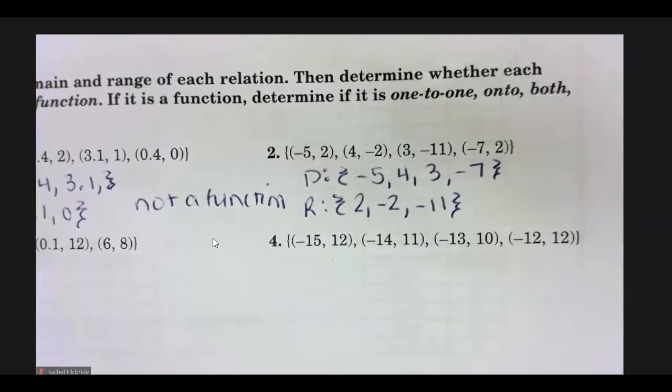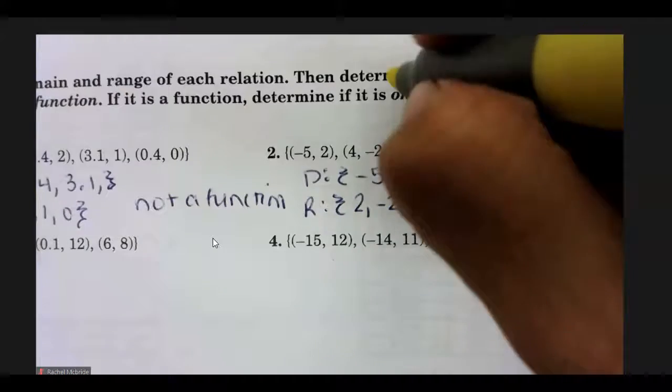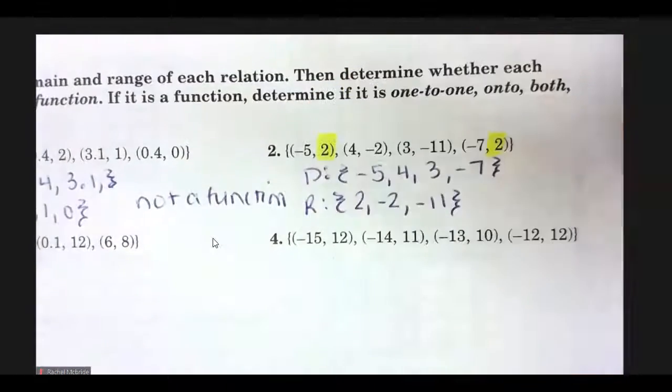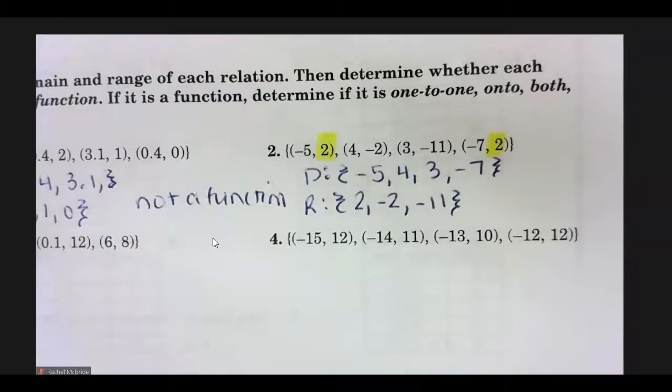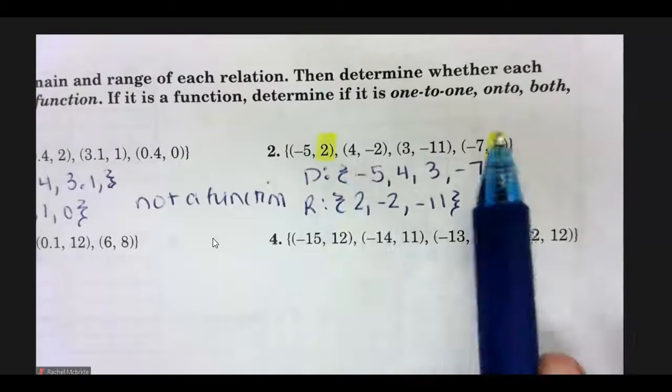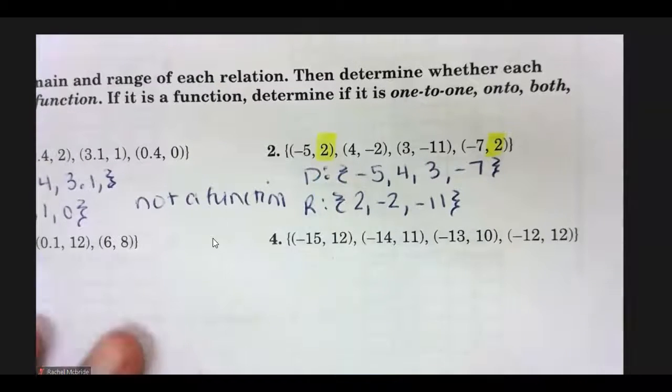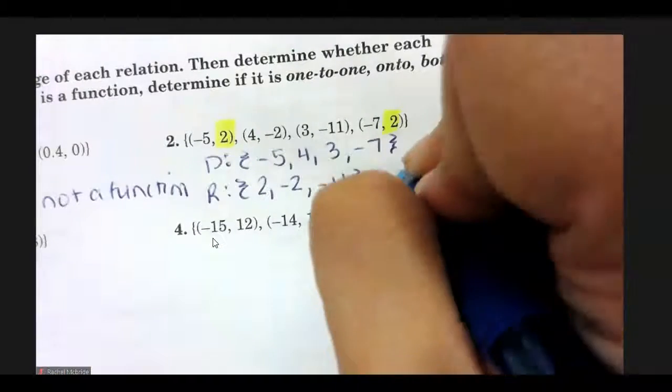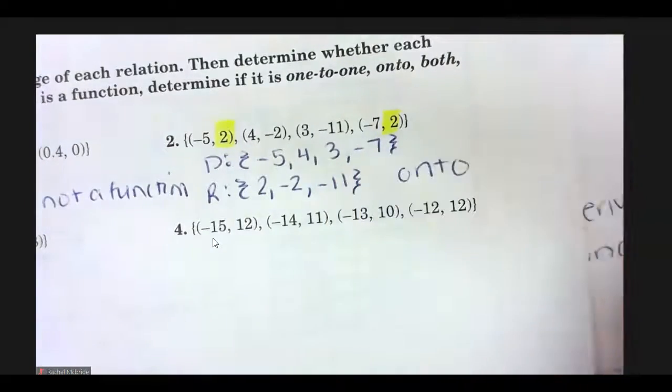Now, this is a function because for every x, there is only one y. It, however, is not one to one because negative 5 and negative 7 both map to 2. So this is a function and it is onto.